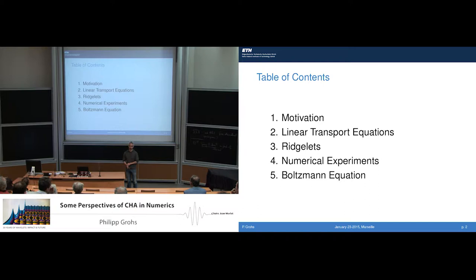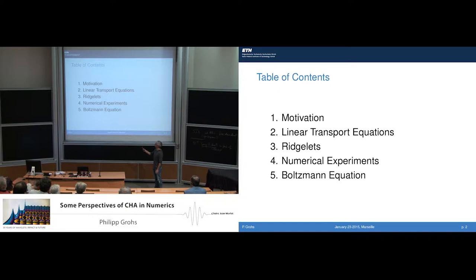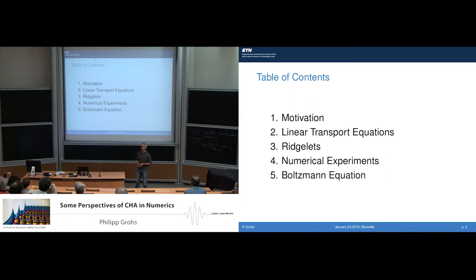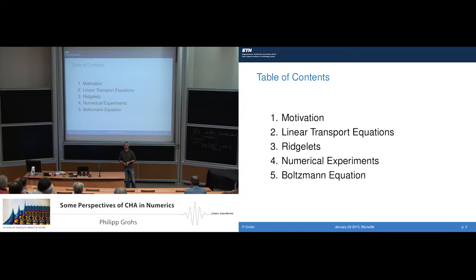Here is the outline of my talk. I will start with a motivation and quickly repeat some things that Albert has talked about in his presentation. Then I will focus on a problem of solving kinetic transport equations, and I will show that using a ridgelet discretization in space for this particular type of problems yields optimal algorithms. I will then show some numerical experiments which confirm this theoretical result. And if time permits, I will also briefly talk about some recent work on numerical discretizations of the Boltzmann equation.